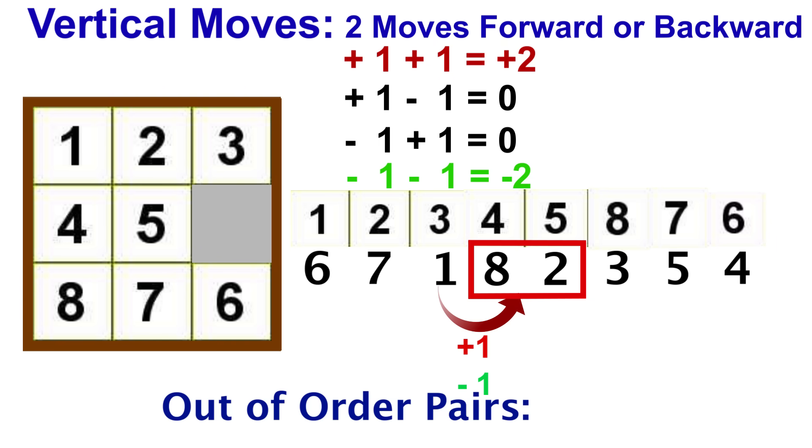If our puzzle starts with one out of order pair, and these are the only options, no matter how many moves we do, adding 2, subtracting 2, or staying the same, there is no way to reach 0 out of order pairs, which was our goal. Thus this puzzle is impossible.